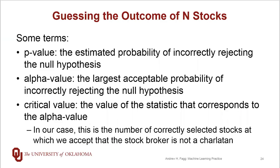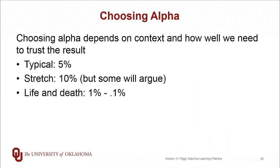So we've hit all of these ideas: p-value, alpha value, and critical value. How we choose an alpha really depends on the domain. It's typical to choose 5%. If we have very little data and need to make preliminary conclusions, we might be willing to push alpha up to 10%, though people will argue about that for good reason. When making life and death kinds of decisions, we prefer alpha to be down in the 1% to 0.1% range or even better.